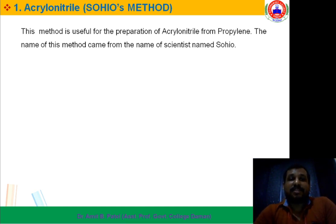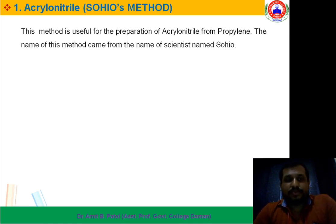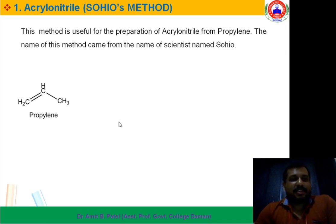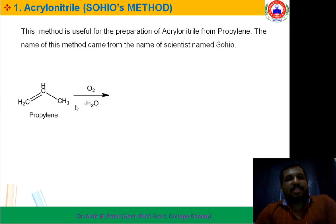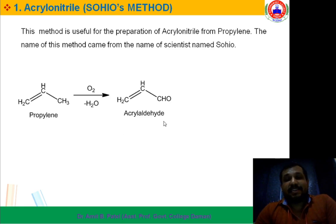The name of this method came from the scientist's name Sohio. Here is the Propylene — Propane means one, two, three carbons and one double bond. That means Propylene, or you can even say Propene. On Oxidation, it yields Acrolein.